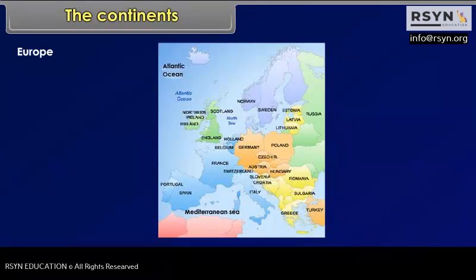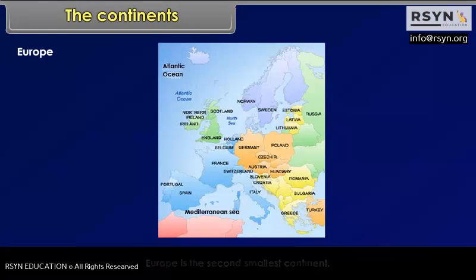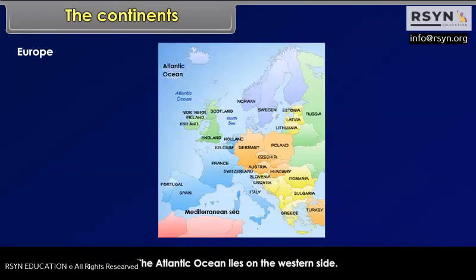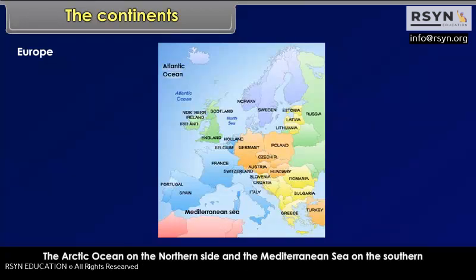Europe is the second-smallest continent. Water bodies bind it on three sides. The Atlantic Ocean lies on the western side, the Arctic Ocean on the northern side, and the Mediterranean Sea on the southern side.